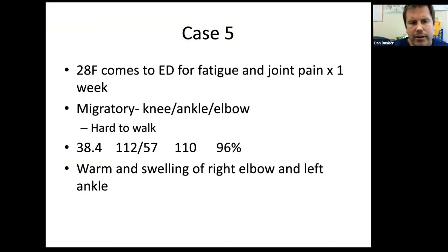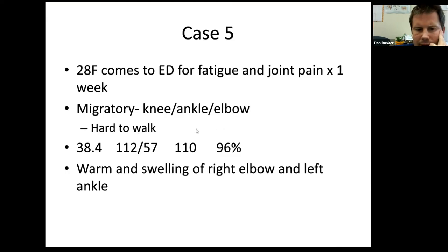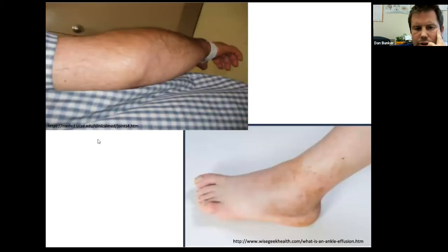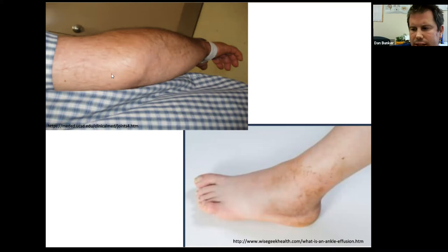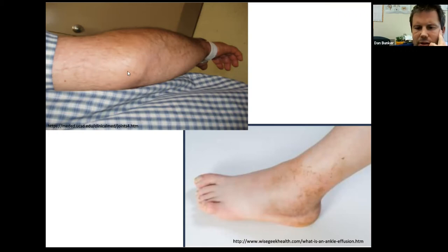Case five: a 28-year-old female presenting to the ED with fatigue and joint pain for the last week — knee, ankle, and elbow pain. It's very hard to walk. The joints are warm and swollen on exam, and she's febrile at 38.4. An elbow effusion layers proximally. How do you differentiate olecranon bursitis from an elbow effusion on exam?